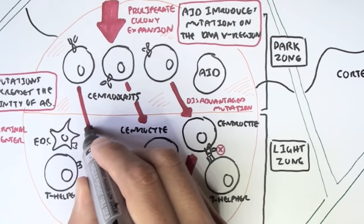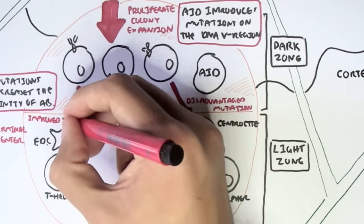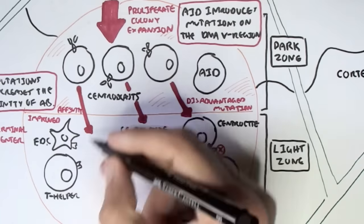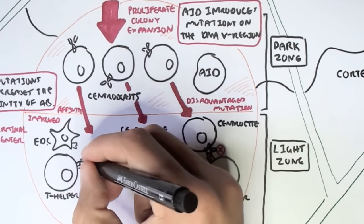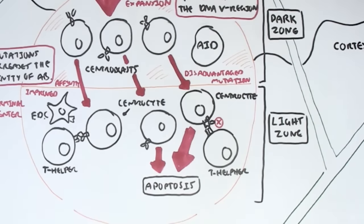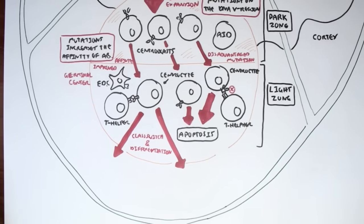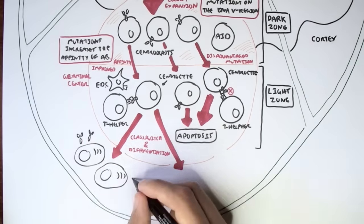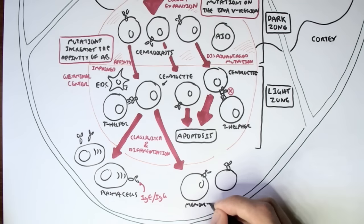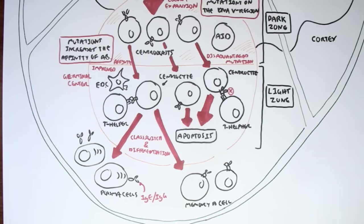However, a centroblast with improved affinity through hypermutation, as it moves to the light zone and becomes a centrocyte, will recognize the antigens from the T helper cell or the follicular dendritic cell. The body would want to produce more of this centrocyte because it had improved affinity. So this centrocyte will undergo class switching and differentiation, where it will become either a plasma cell or a memory B cell with a different type of antibody class, such as IgE or IgG. That is class switching.